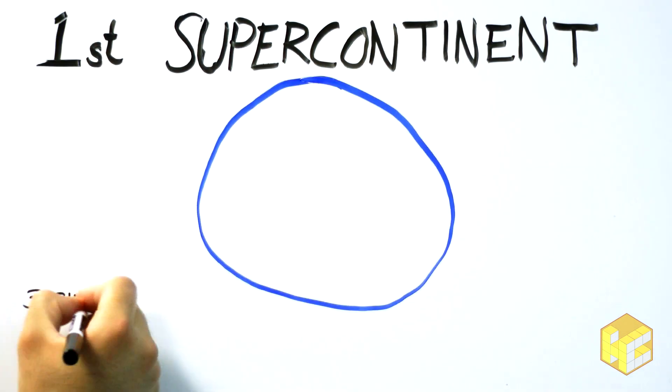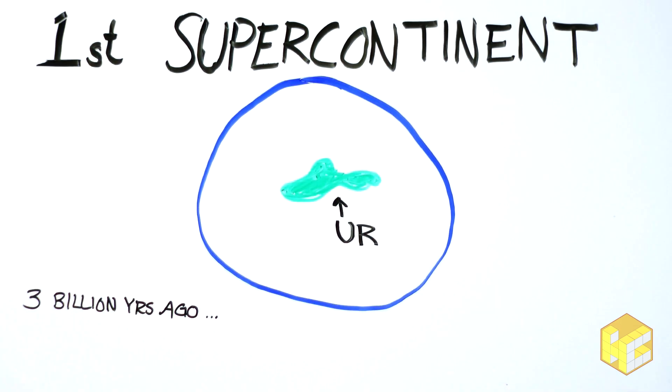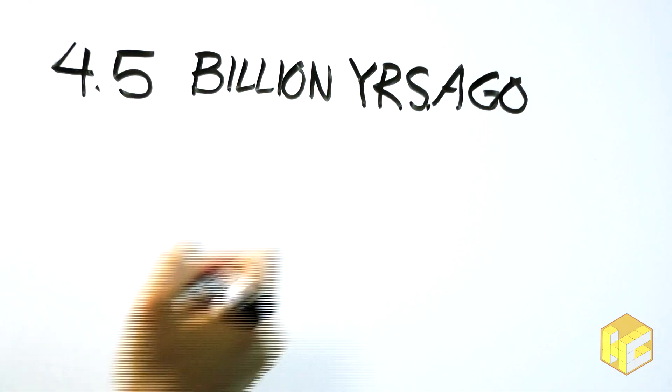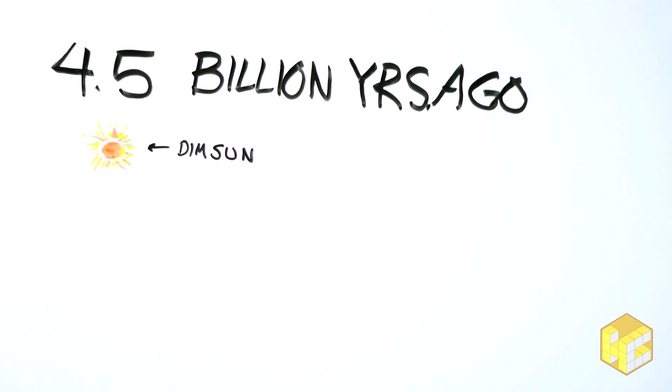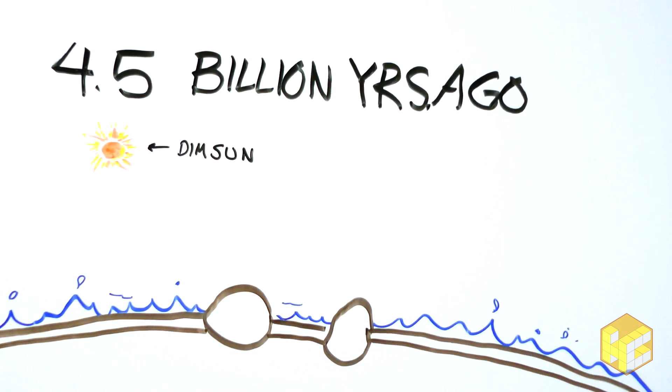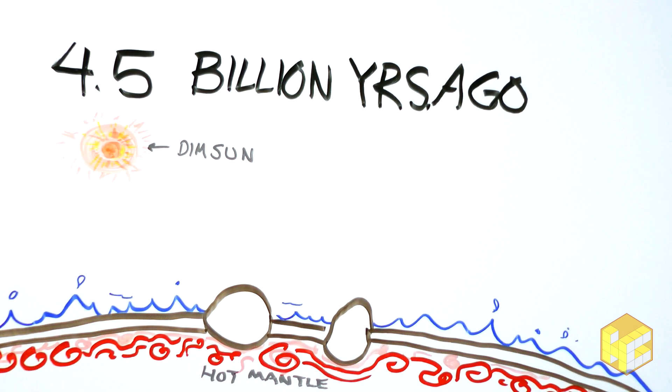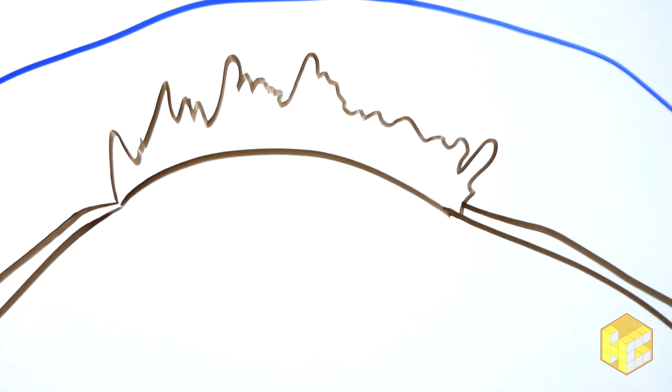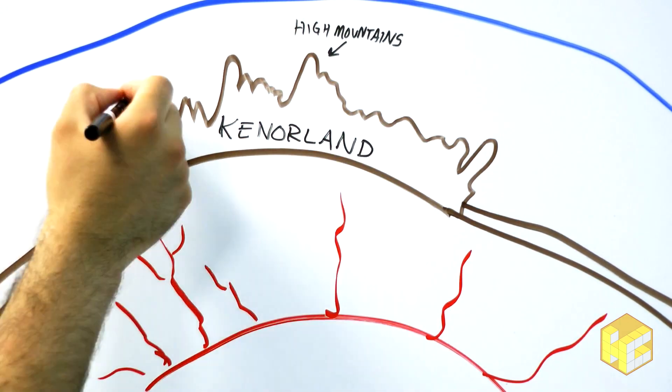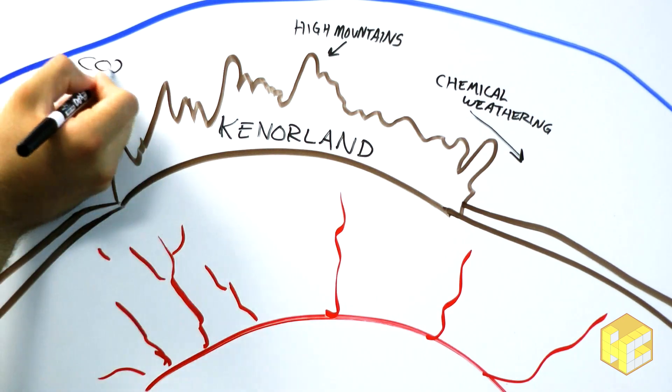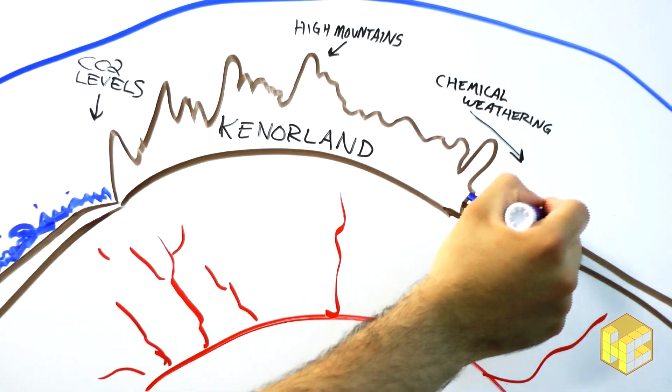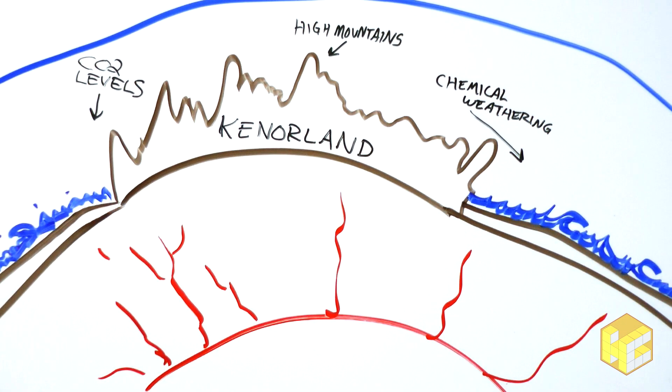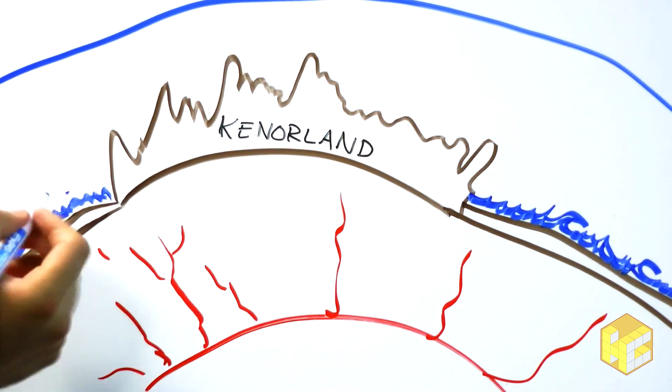The first supercontinent was Ur. It formed three billion years ago. Billions of years ago, when the Earth formed, the mantle was much hotter and the sun cooler. As time went on, the sun warmed up and the mantle cooled. When the second supercontinent, Kennerland, was formed, it blanketed the hot mantle, keeping heat from escaping. The higher elevations caused by the mountain building, combined with the increased chemical weathering, resulted in decreased carbon dioxide in the atmosphere and the first snowball Earth.